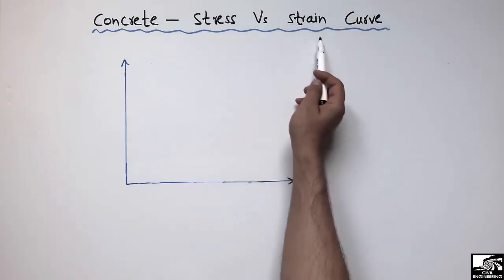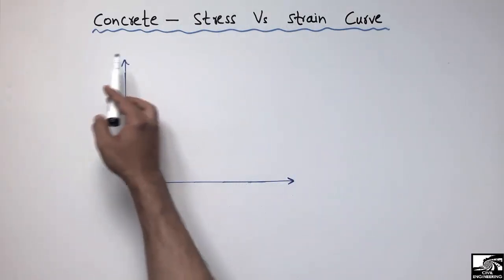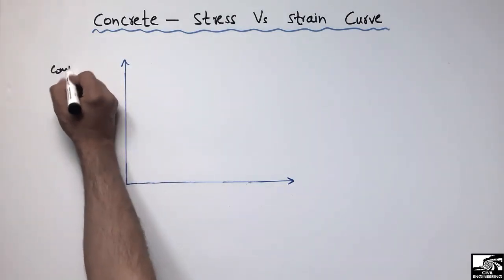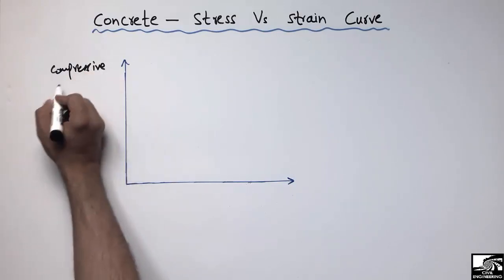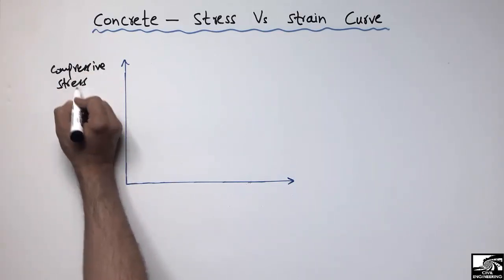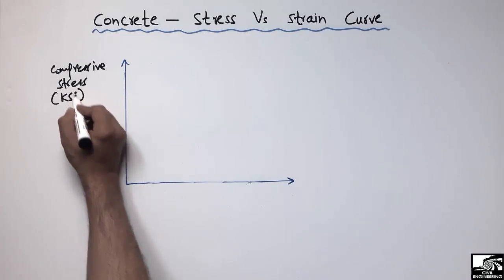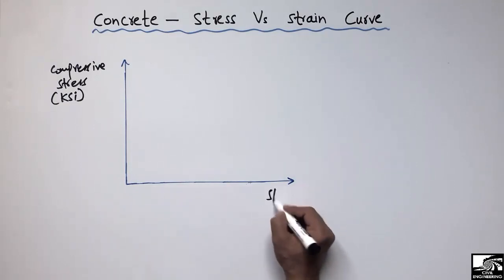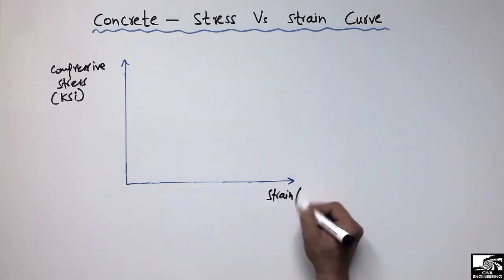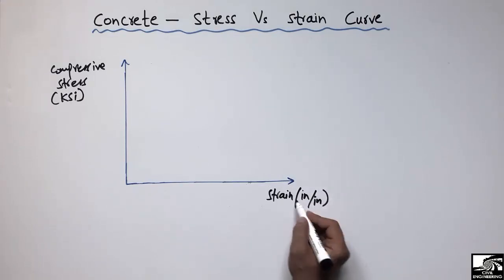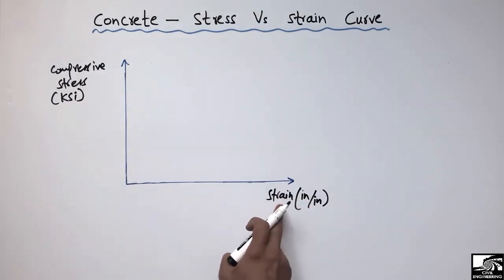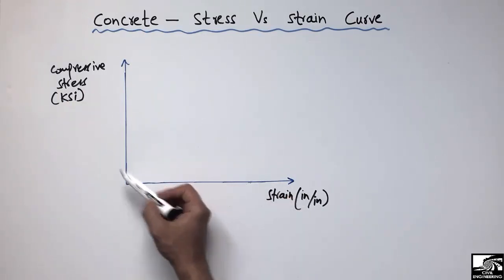If I take these two axes: the Y-axis shows the compressive stress for the concrete material in units of KSI or PSI (pound per square inch or kilo-pound per square inch), and the X-axis shows the strain, which is a unitless quantity — or we can represent it as inches per inch. So we have a plot between these two quantities for the concrete.